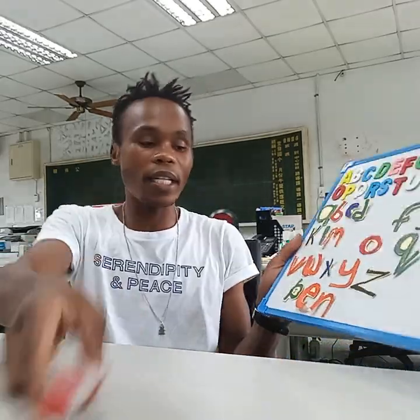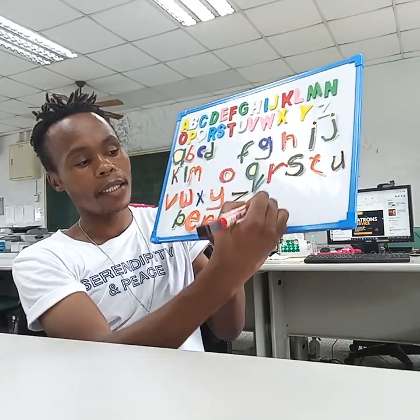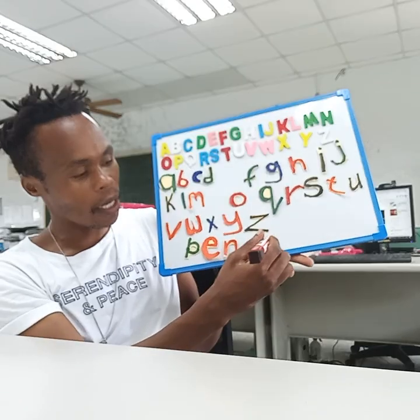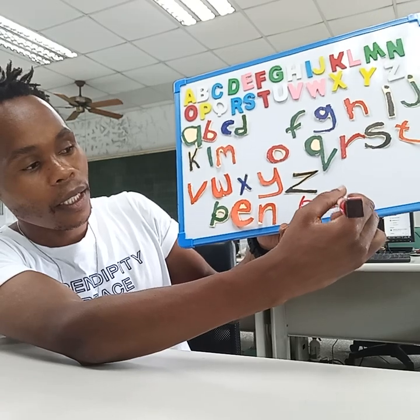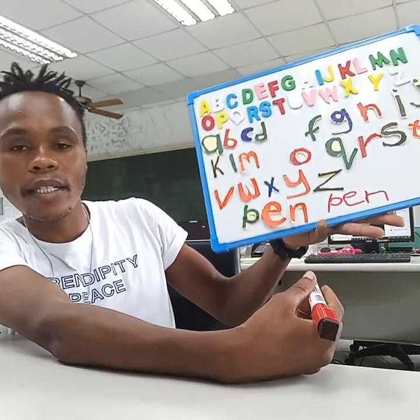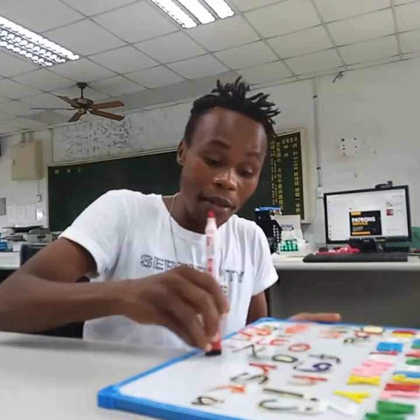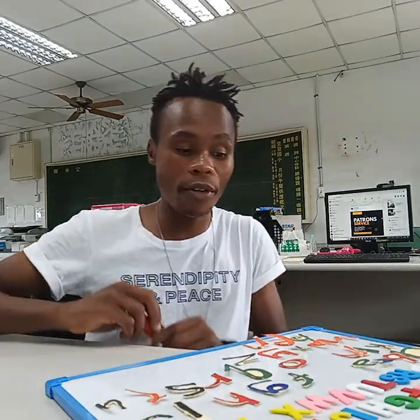So you guys learned about that. And when you have to write now, the pen is written as you see — it's a P, and it's an E, and then the last one is N. So it's a pen. You see, it's the same. So now you know how to write a pen. When you have to write a pen, it shouldn't be a problem, because pen is made of P-E-N.